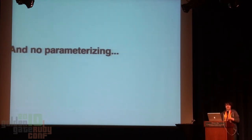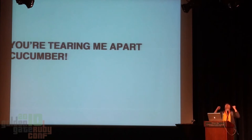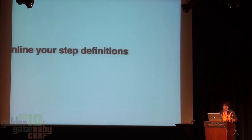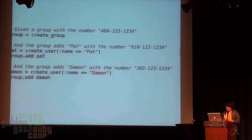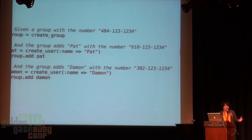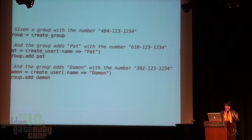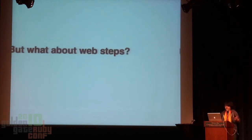You can parameterize your steps, but the line gets so long you can't even see the rest of it. Parameterizing the steps equals pain. So no instance variables and no parameterizing — you're tearing me apart, Cucumber! The solution, as we found it at GroupMe, is to inline your step definitions, which basically means ripping out Cucumber. Given a group with that phone number — we do all the features in comments. Under each comment, we just write a little bit of Capybara code to express that. And really, that should be readable enough anyway — it should just look like group.add_pat, group.add_daemon.